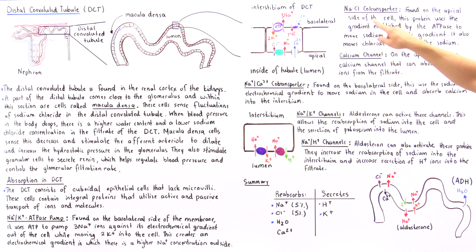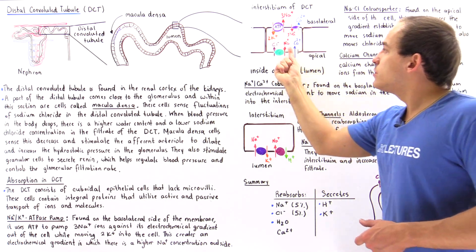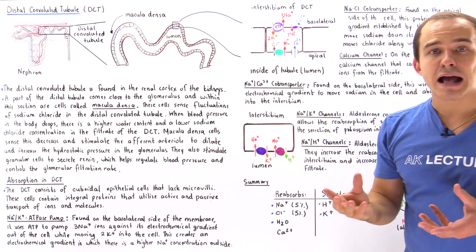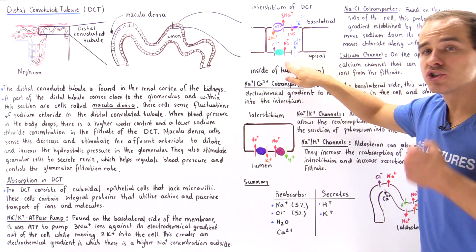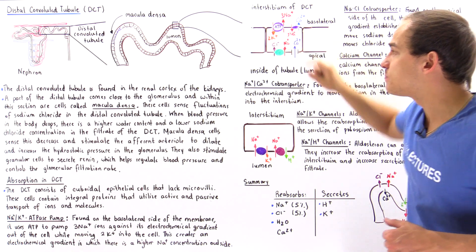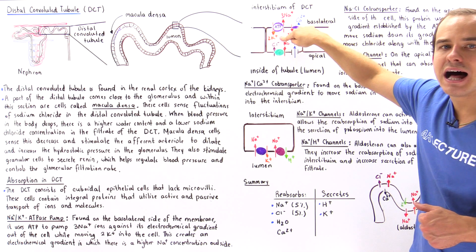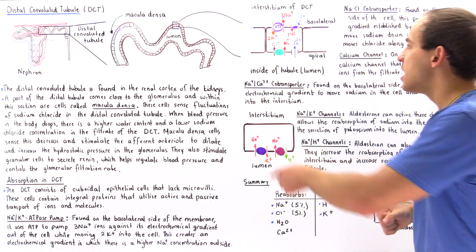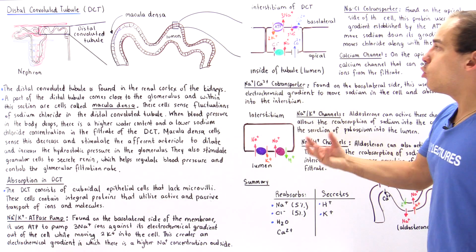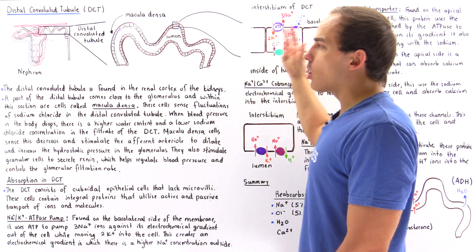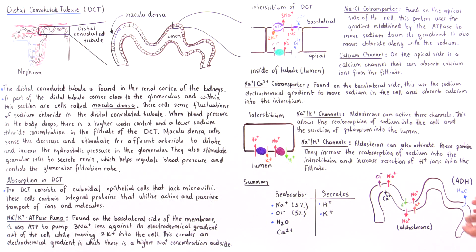The second transporter is the sodium chloride co-transporter, which functions as a result of the electrochemical gradient established by the ATPase pump. It allows sodium to move down its gradient from the lumen into the cell, simultaneously moving chloride along with it. The reabsorbed sodium and chloride are then moved into the interstitium and eventually taken up by the peritubular capillaries.